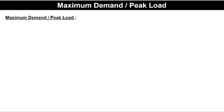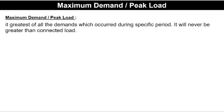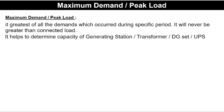What does maximum demand or peak demand mean? We know if the connected load of a house is 10 kW, all 10 kW will not operate at the same time. Sometimes 2 kW will operate, sometimes 5 kW, and sometimes 3 kW. The operating load at a time is varying and is never greater than the connected load. The maximum load which operates during a given time is called the maximum demand or peak load — it is the greatest of all demands occurring during a specified period and will never be greater than the connected load. It helps in determining the capacity of a generator, DG set, and UPS.